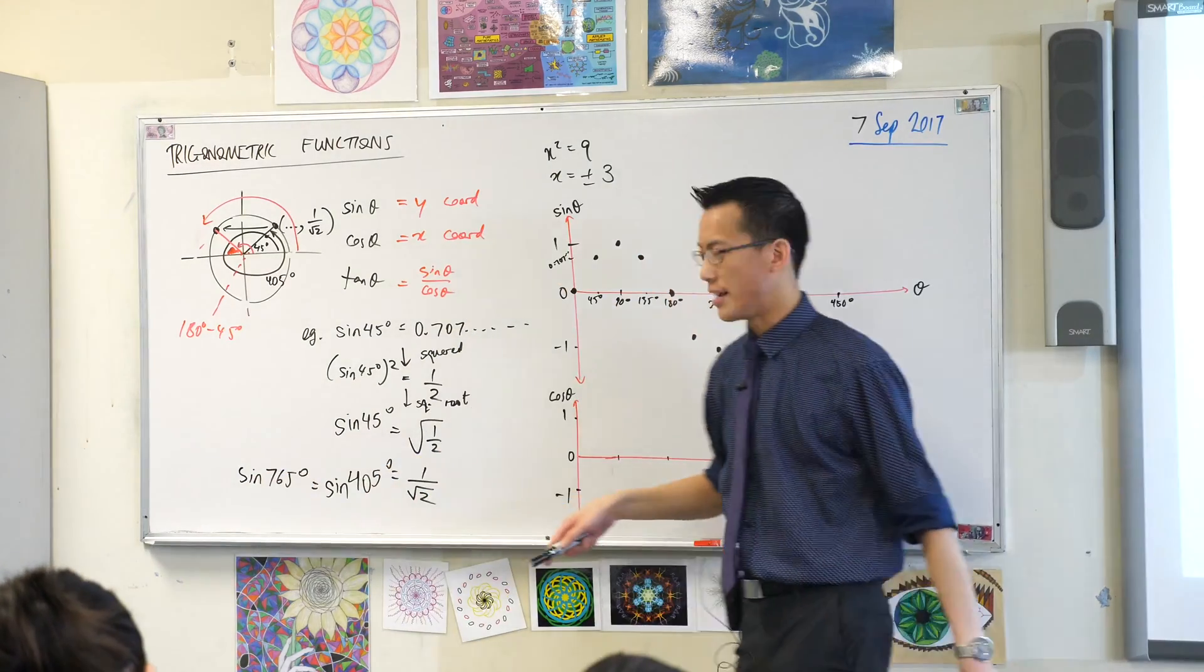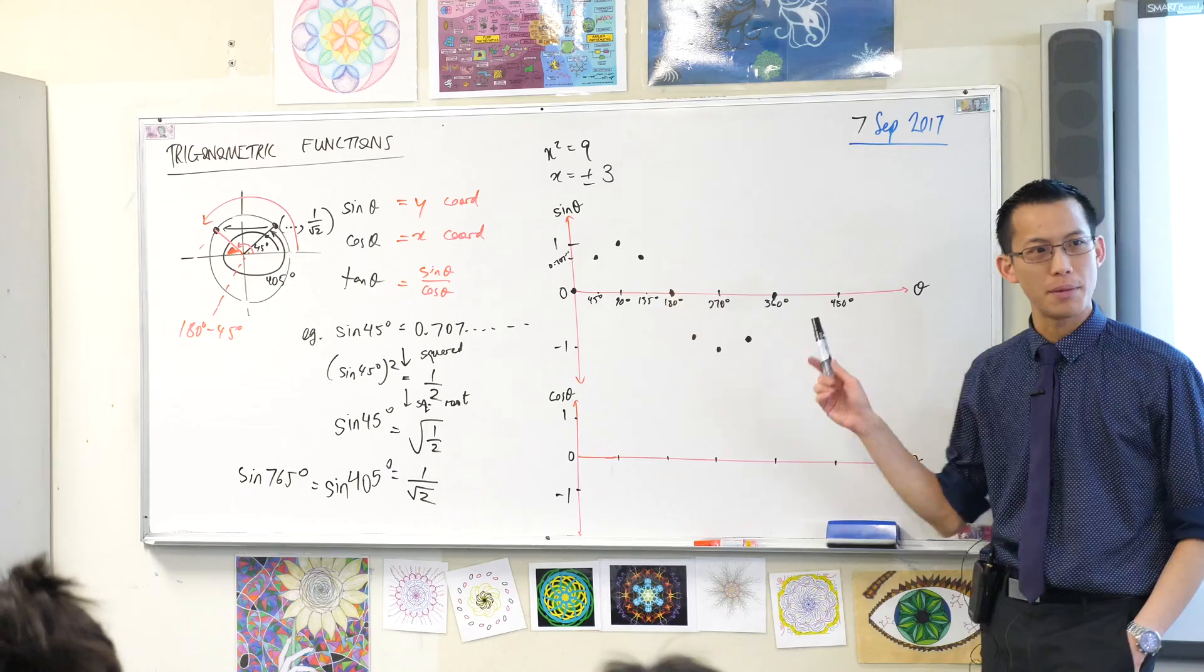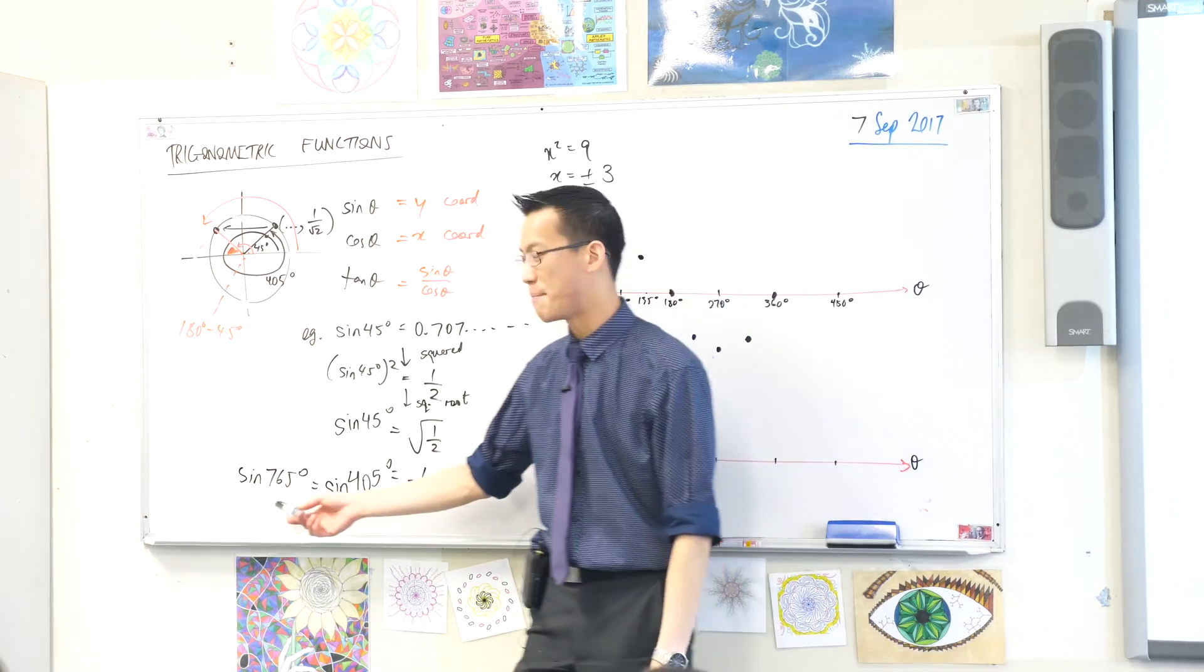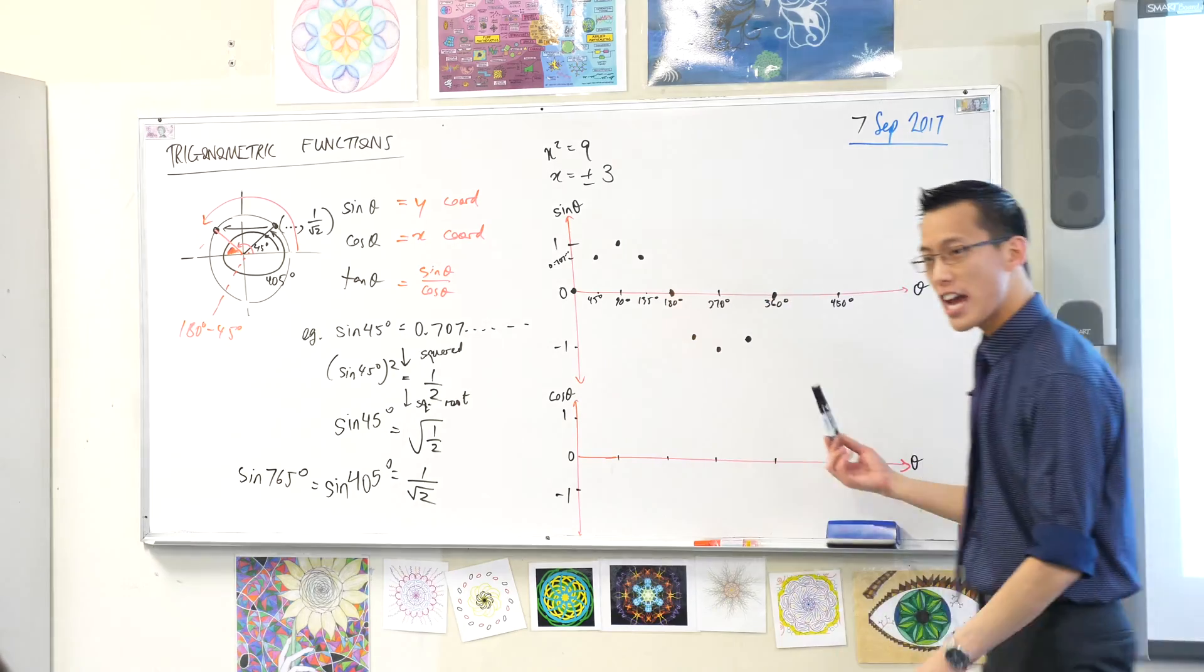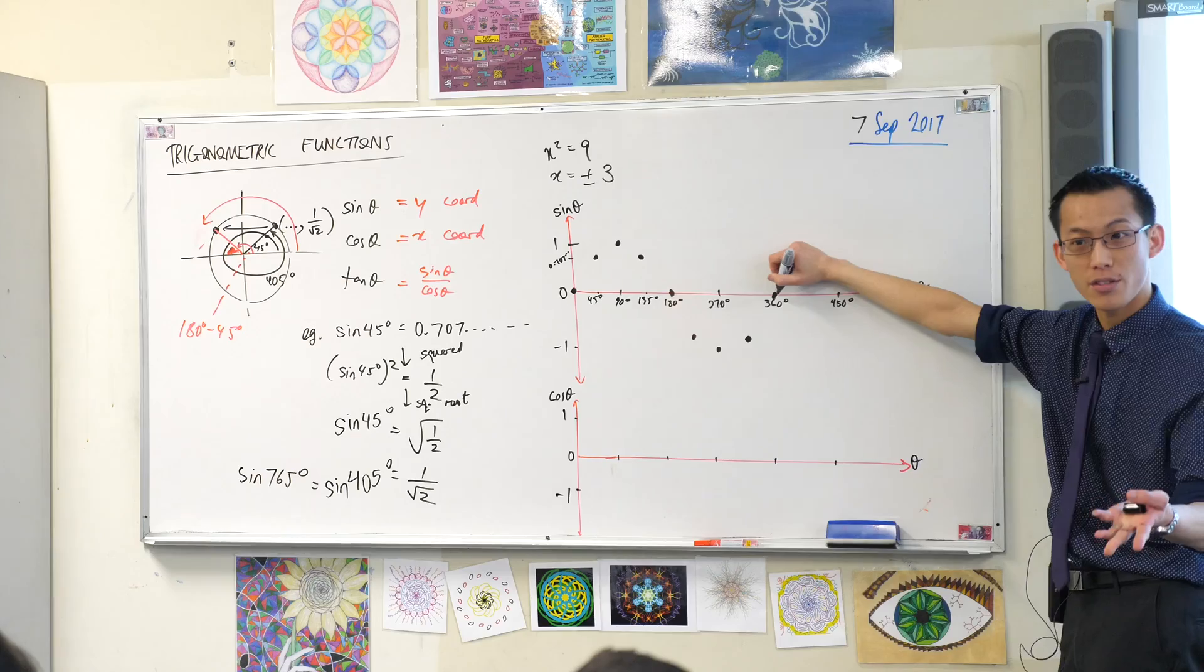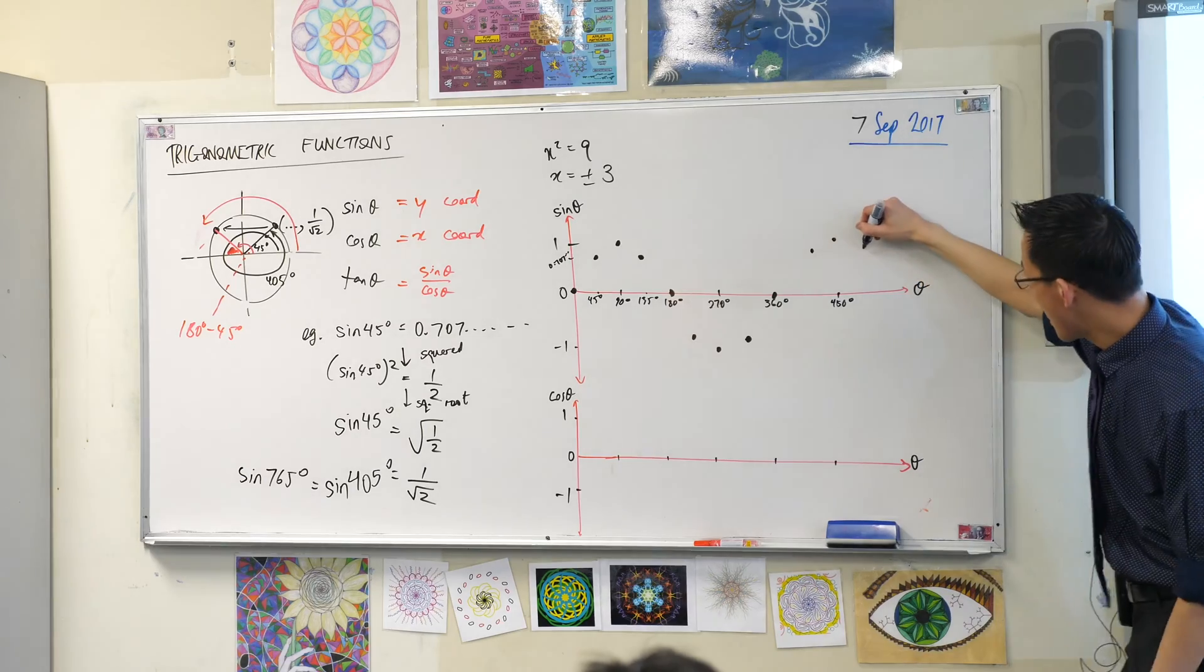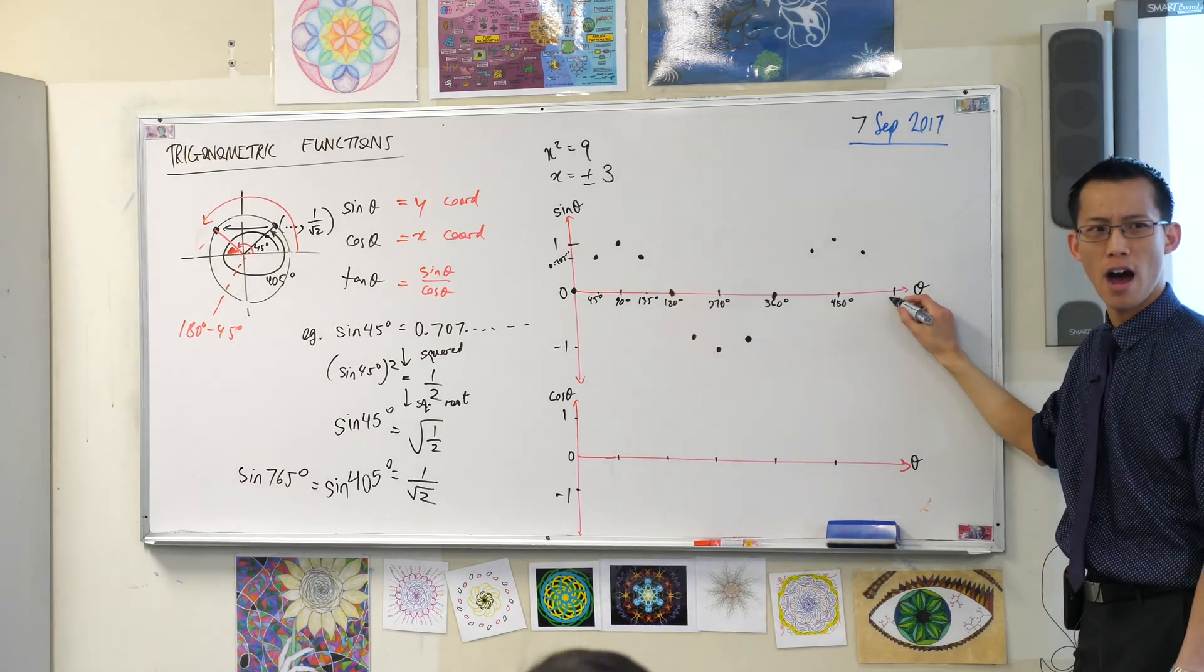And I keep on putting values in and I keep on getting points. Now, what I notice is I get to 360 and I could keep going. But do you remember when you told me, oh, if you get something at 45, the same thing happens 360 degrees later. And the same thing happens 360 degrees later after that. This shape from zero is going to start repeating at 360. It's going to go back up like this. And then it's going to do this weird thing.